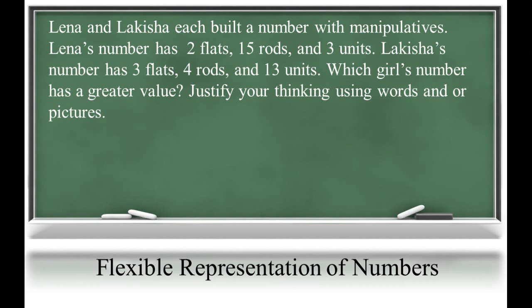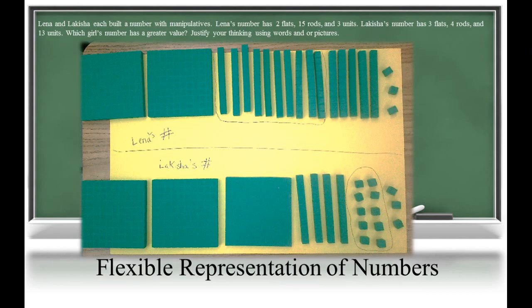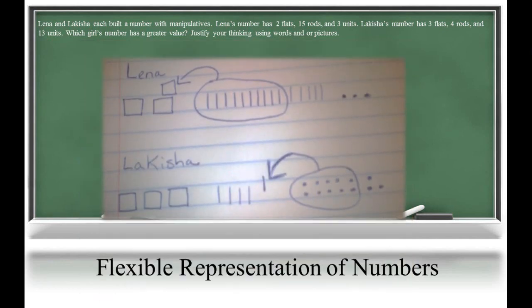One student may grab base 10 manipulatives to solve this problem, as shown here. This physical interaction with the tools allows the learner to regroup the values concretely, finding that each girl's number is actually the same. Another child who has a strong understanding of the concrete phase may have drawn a quick picture to solve as shown here.